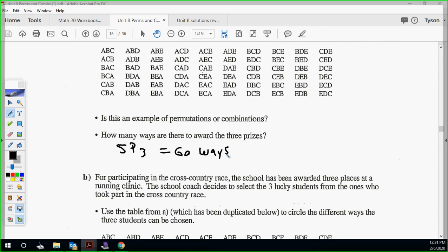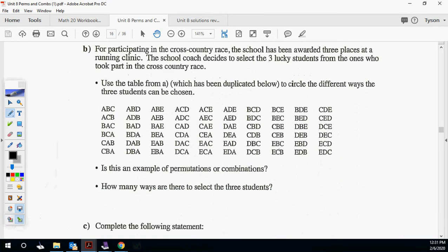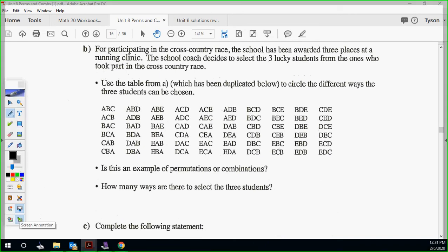This is a really good page to illustrate the difference between the two. They're not always as straightforward, but it's a very good foundational way of looking at the two. Now, we're going to change it to a combination. Participating in the cross-country race, the school has been awarded three places at the running clinic. The school coach decides to select three lucky students from the ones who took part in the cross-country race. Use the table from below, which is duplicated from above. How would this change?